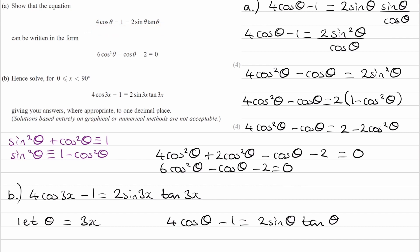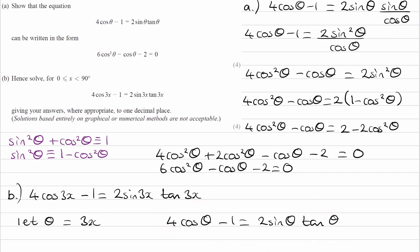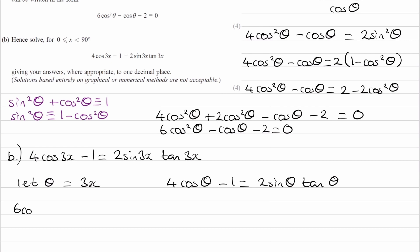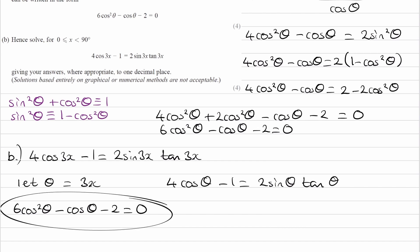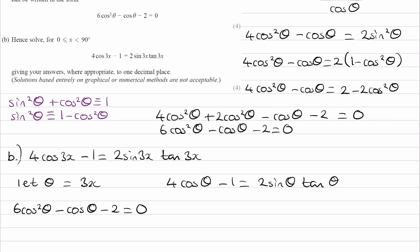So what we have here is exactly equal to what we had there, meaning this equation can be rewritten in the same quadratic form: 6 cos squared theta minus cos theta minus 2 equals 0. So if we solve this equation, we get the solutions, bearing in mind that theta equals 3x. Once we've solved for theta, we then need to rearrange to solve for x. Let's deal with it in terms of theta for now, as that will be a bit easier.